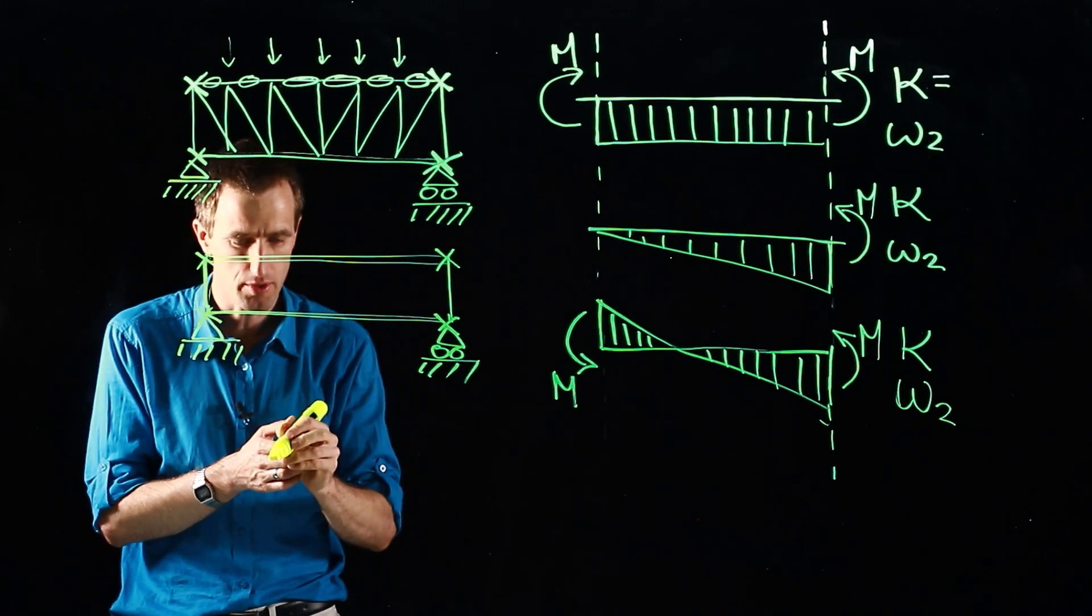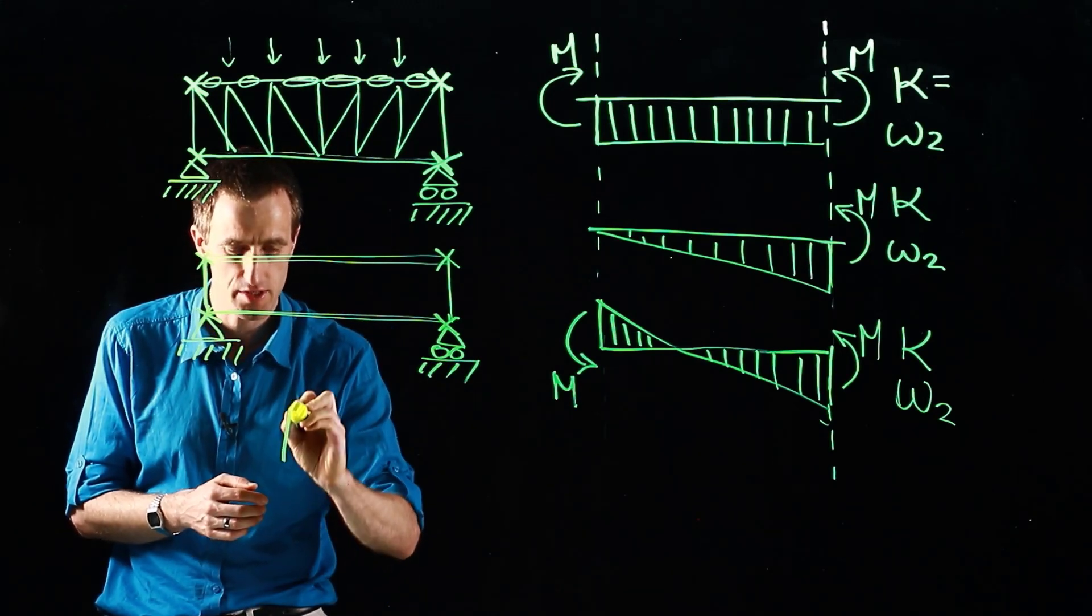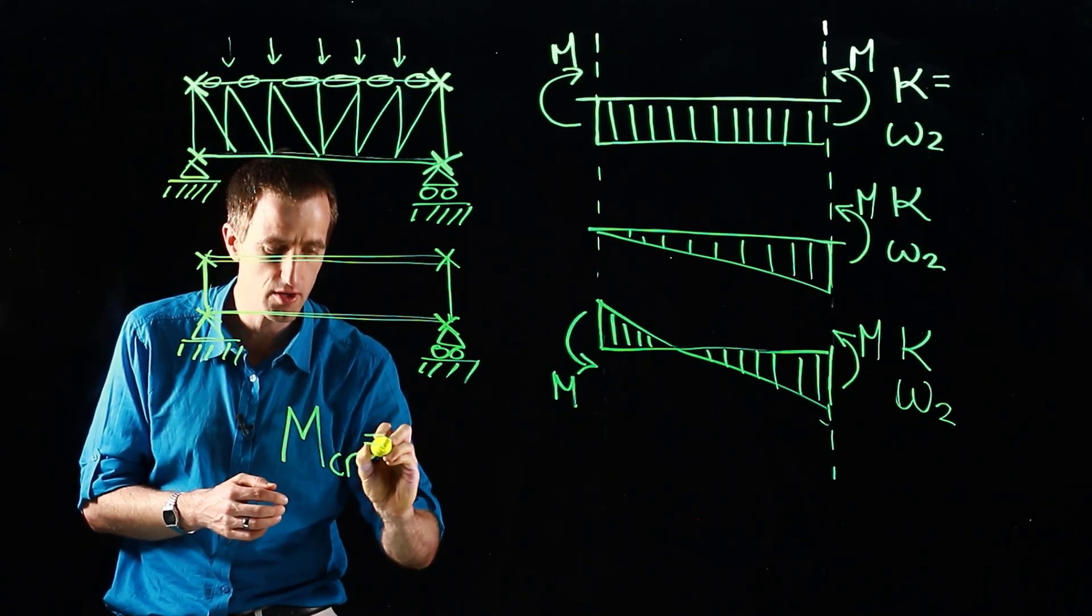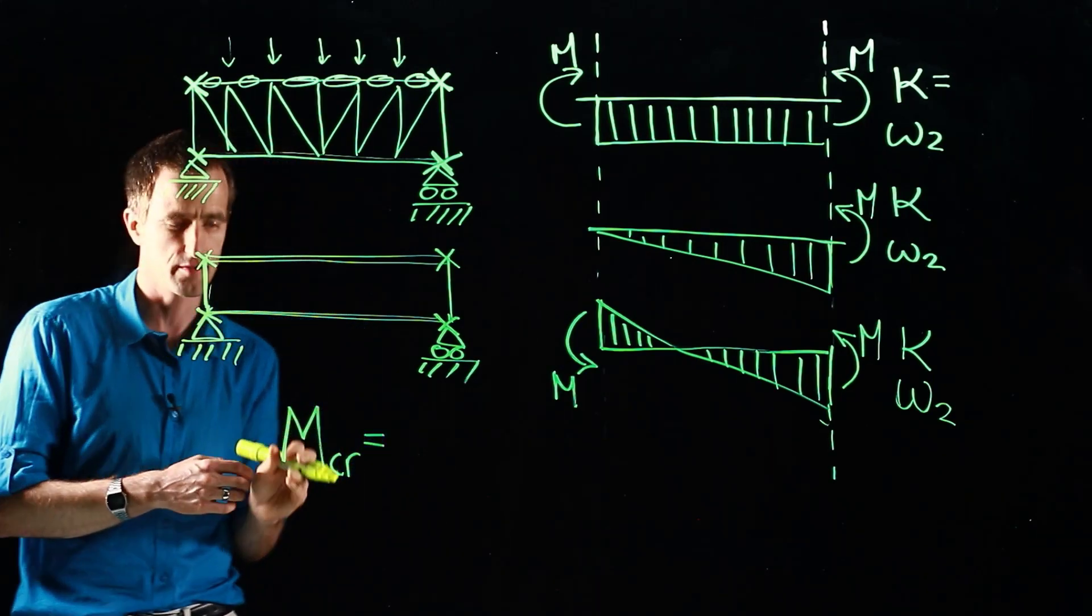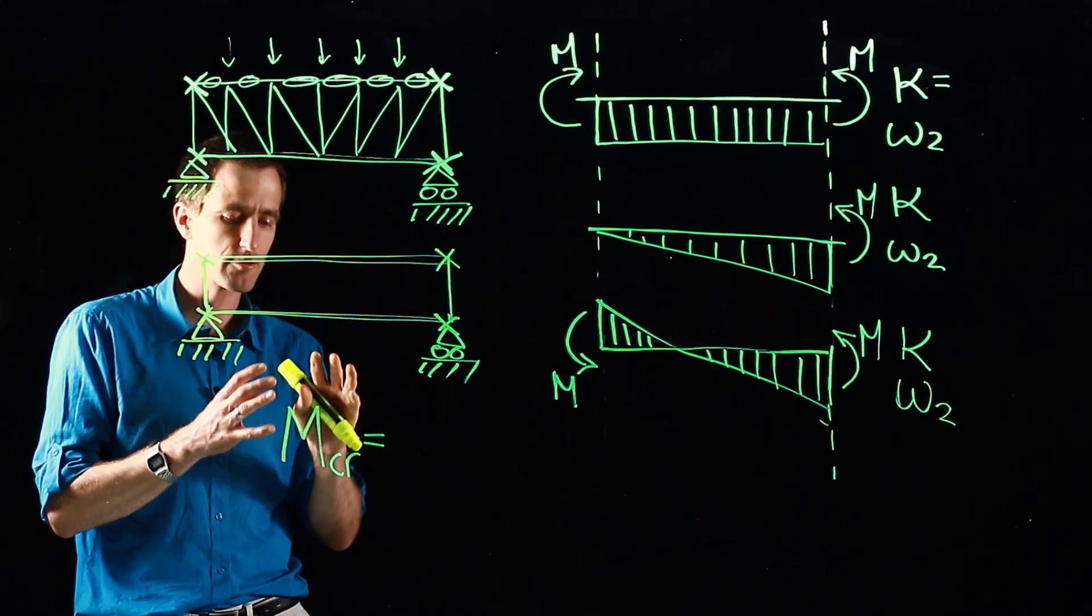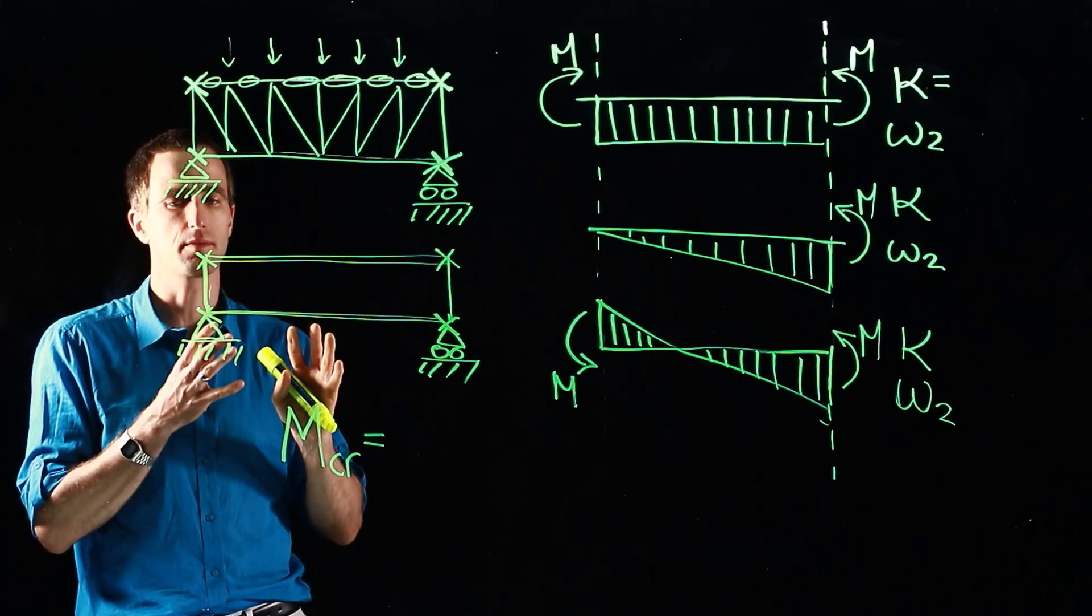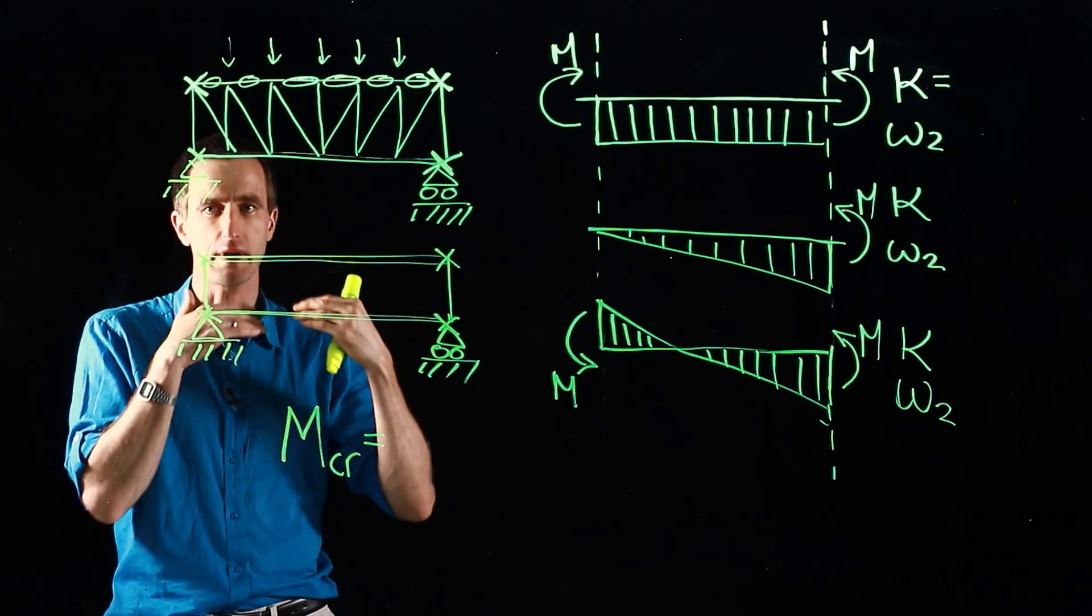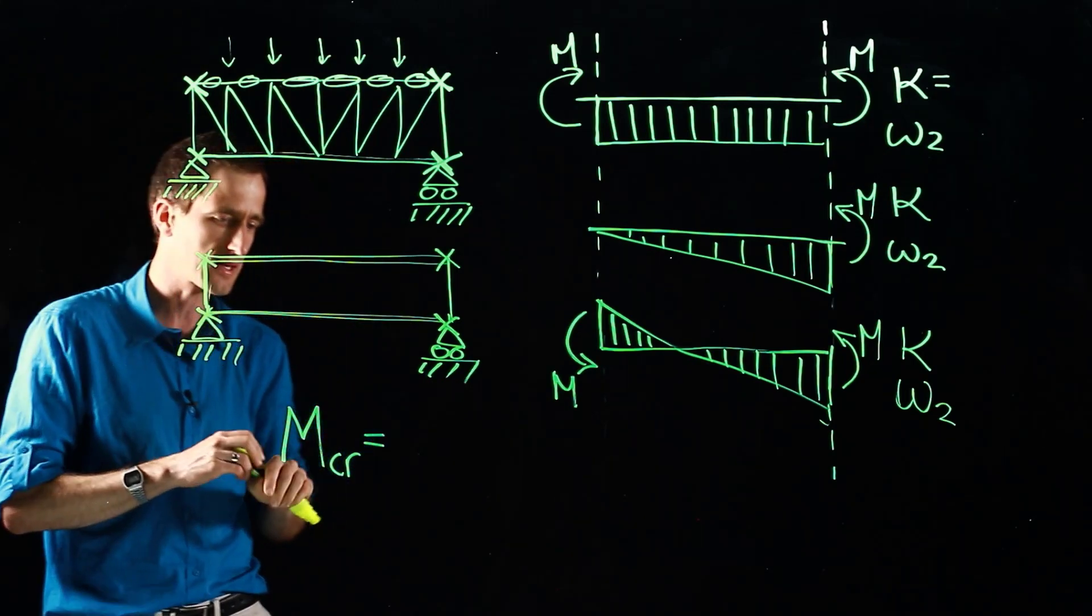But just coming back to the question I posed just now in terms of how does shape of bending moment diagram influence capacity we have our MCR our critical moment of resistance and that is the buckling resistance of a perfect elastic beam. So no imperfections nothing else it's just at what point will this perfect beam experience lateral torsional buckling.